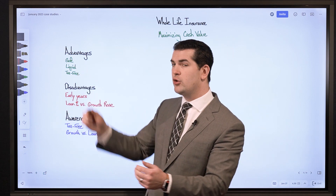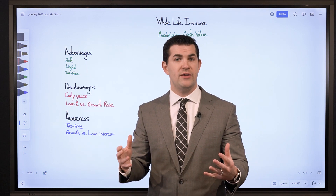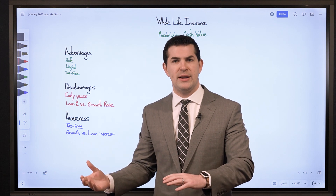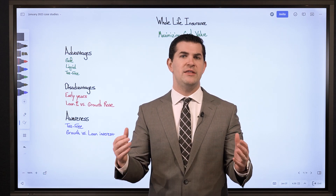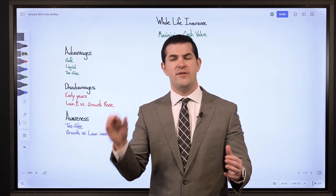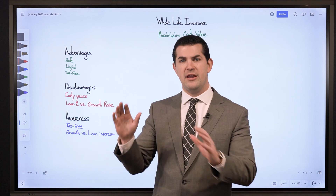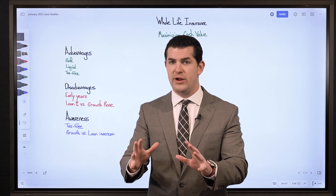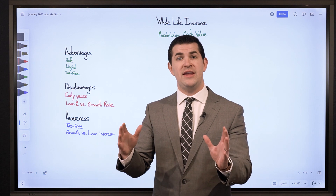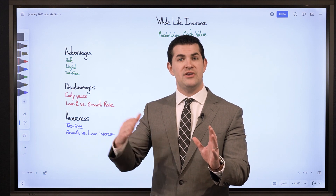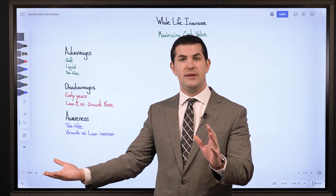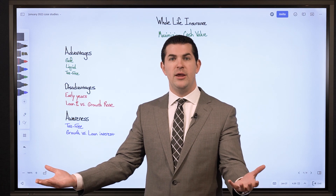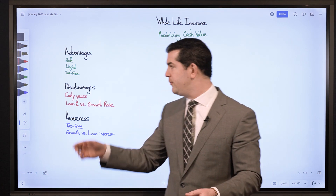When we look at the net growth rate — the internal rate of return — we'll typically see whole life insurance policies produce somewhere in the neighborhood of a 3% to 5% net internal rate of return, at the end of the day. That's if the policy is set up with one of the major mutual companies and designed with a minimum premium, meaning it's maximized for cash value.